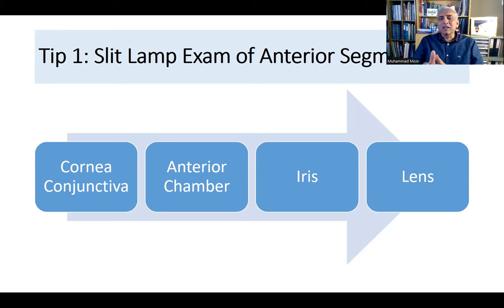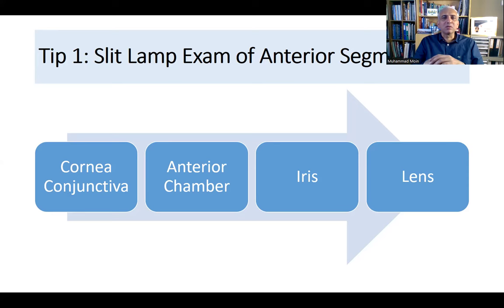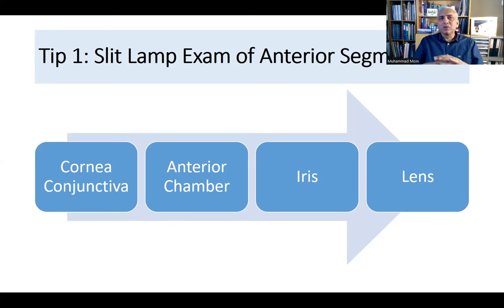If it's conjunctivitis, there should be no corneal involvement unless it's adenoviral, in which case you may see punctate keratitis. For the lens, use the LOCS III classification. There are three types of lens opacities: nuclear sclerosis, posterior subcapsular opacities, and cortical opacities. Always grade all three. During the slit lamp exam, do a slit beam examination, then retroillumination, then diffuse illumination, and sclerotic scatter for the cornea.